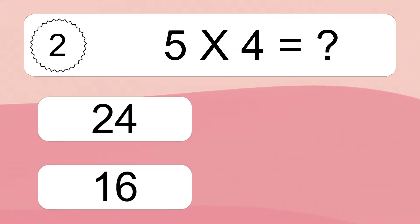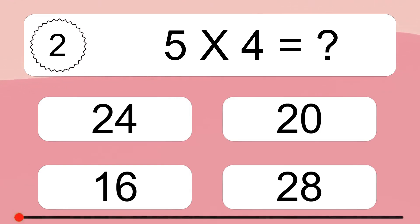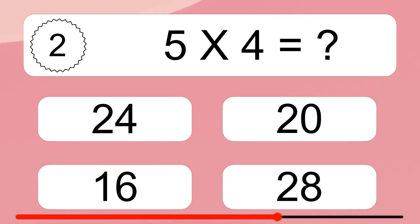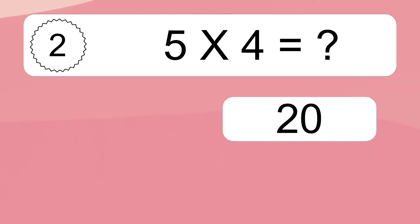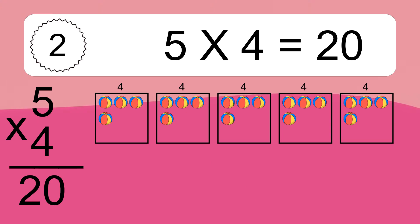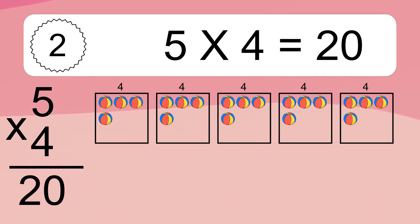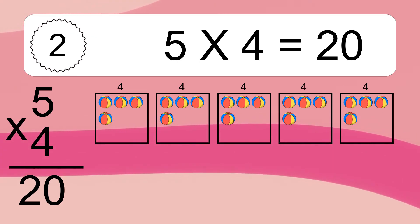5 times 4 equals what? 5 times 4 equals 20. We have 5 boxes, and each box has 4 colorful balls inside. If you count all the balls in all the boxes together, you will have 5 times 4 balls. This equals 20 balls.